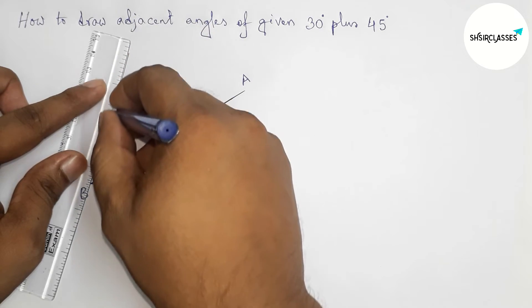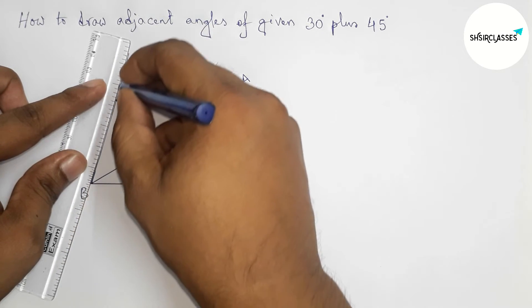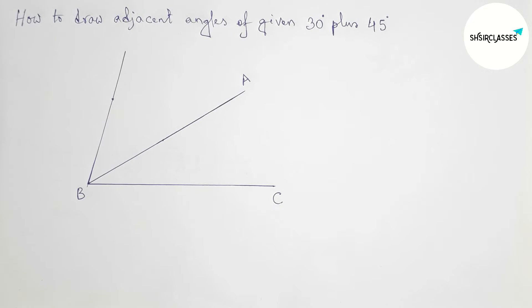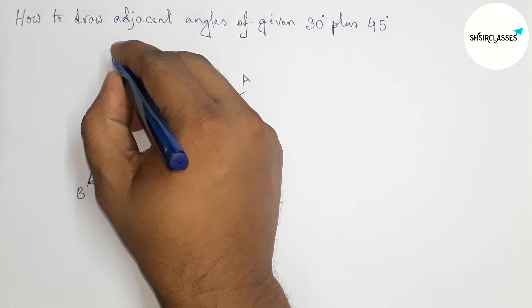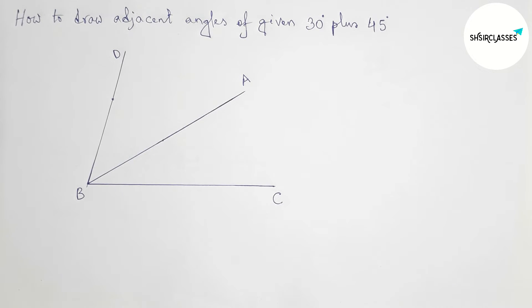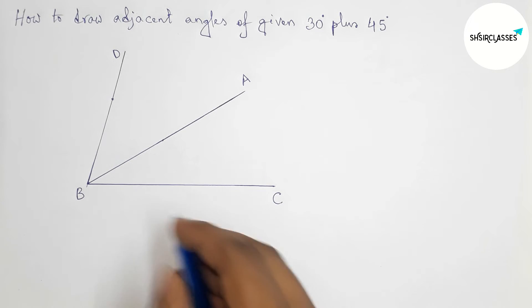So now joining this to get 45 degree angle, okay. Now labeling here point D, okay. So this is perfect.